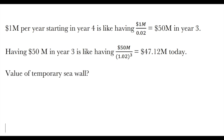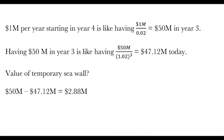What if I could put up a temporary seawall starting next year and going just until the permanent wall was built? If it offered the same protection, it would be as if we had a permanent wall the whole time. The permanent wall from the start was worth 50 million, and the permanent wall starting in 3 years was worth 47.12 million, so the temporary wall adds the difference — 50 million minus 47.12 million, which is 2.88 million.